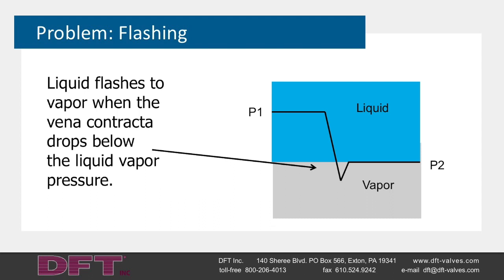Problem: flashing. Flashing is a liquid flow phenomenon that occurs when the pressure in the liquid flow stream drops below the vapor pressure of the liquid. When this occurs, vapor bubbles form in the liquid. This condition will typically occur at the point in the flow stream where the flow area is at a minimum, the velocity is at a maximum, and the associated pressure is at a minimum.